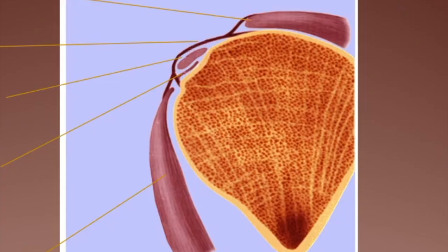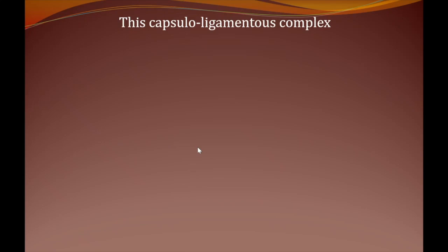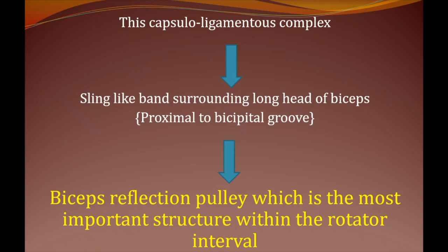Now to show the biceps pulley anatomy. This image is of utmost importance and will be repeated many times — you will understand why when we discuss the pathology. The biceps pulley is a capsuloligamentous structure surrounding the long head of the biceps, keeping it in place within the groove. In abduction and external rotation, this biceps pulley prevents medial subluxation of the biceps tendon.